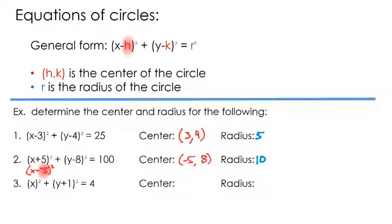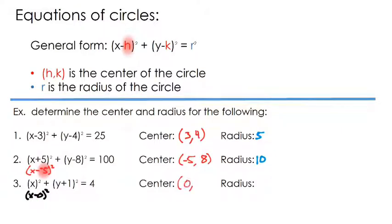Now let's look at the last example from this slide: x squared plus y plus 1 squared equals 4. This doesn't look like the general form, but we can think creatively. x squared is really just x minus 0 squared, so the h value — the x-coordinate of the center — is 0. And the y-coordinate: if we see y plus 1, that means the y-coordinate is negative 1. Lastly, the radius is 2 because 2 squared is 4.